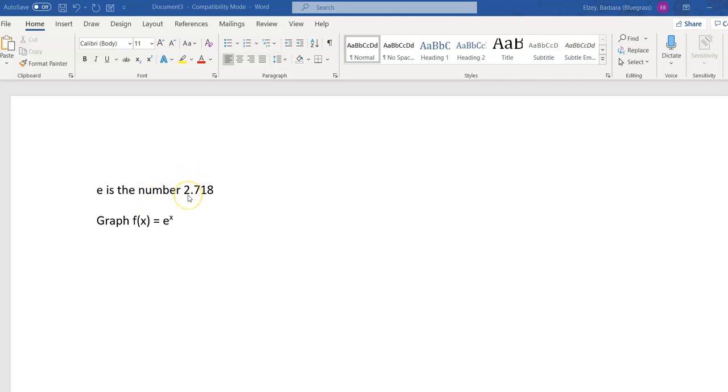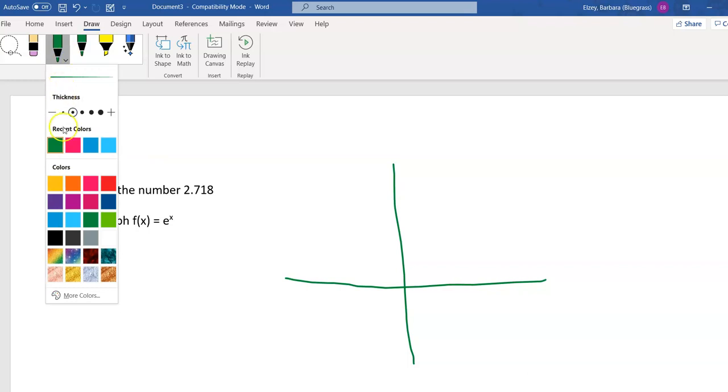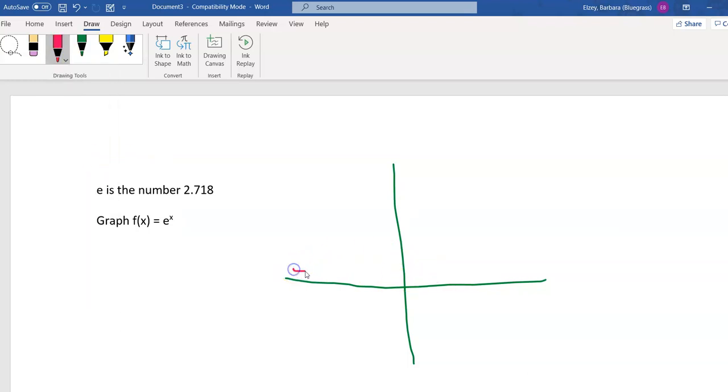Now, since e is the number 2.718, remember we said that any exponential function that has a base greater than 1 will have an increasing shape. So I'm going to draw that. I'll use the draw feature. And I'm going to draw my increasing graph. And it looks like this.